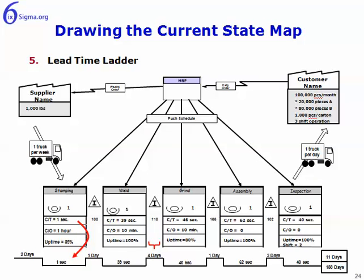The current state value stream map then has the information flow, the fulfillment or material flow, and then the lead time calculation. This is a completed current state value stream map, and it should be fairly self-evident from this where the opportunities are. You have to ask the question: what is my big why? What is it I'm trying to affect? If you're constructing a value stream map, it's probably something to do with time. We now have a representation of where time is being consumed — specifically the time the customer sees, which is typically the lead time.